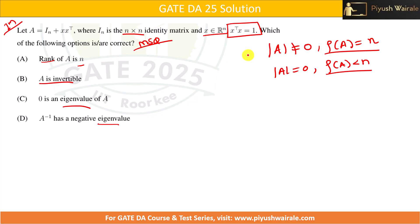Also, A is invertible means A-inverse exists, and A-inverse exists only when the determinant of A is not equal to zero. So if we can prove that the determinant is nonzero, both the rank and invertibility options can be correct — everything ties back to the determinant.